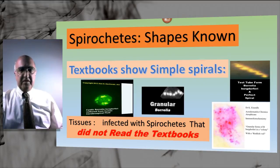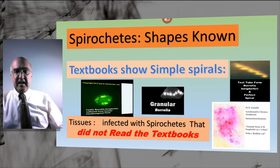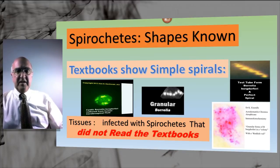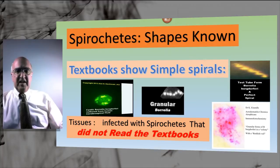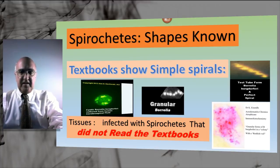An example of a group of spirochetes in disease tissue is a biofilm colony, which we will describe later in the lecture. Biofilm is a community of spirochetes or other microbes protected by a layer or matrix or slime material which surrounds the individual microbes and protects them from assault by antibiotics and other adverse conditions.